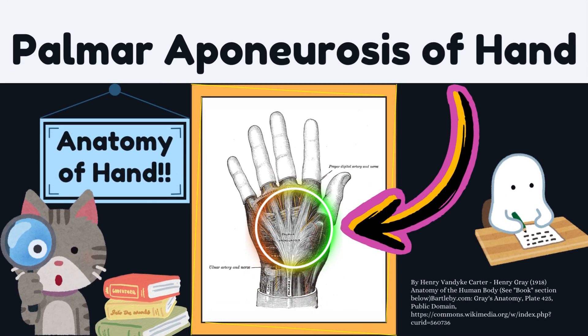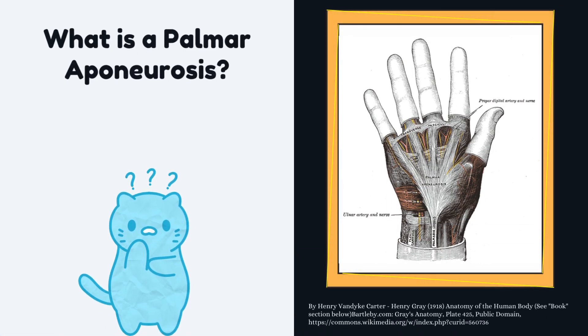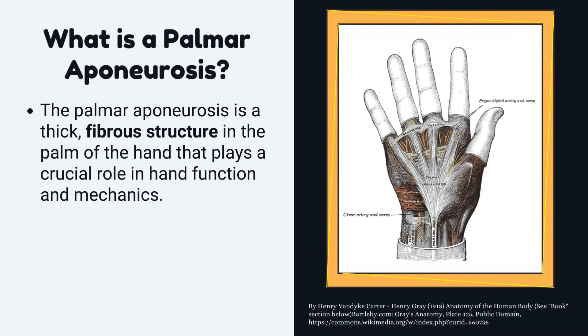In this video, we will talk about the palmar aponeurosis of the hand. The palmar aponeurosis is a thick fibrous structure in the palm of the hand that plays a crucial role in hand function and mechanics.